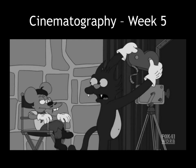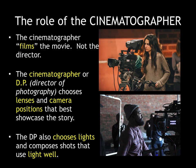This week we will be learning about the art of cinematography and what a cinematographer does. Typically on Hollywood movies, the person holding the camera is not the director but rather the cinematographer, or the director of photography, most often referred to as the DP, who chooses lenses and picks camera positions that best articulate the story.